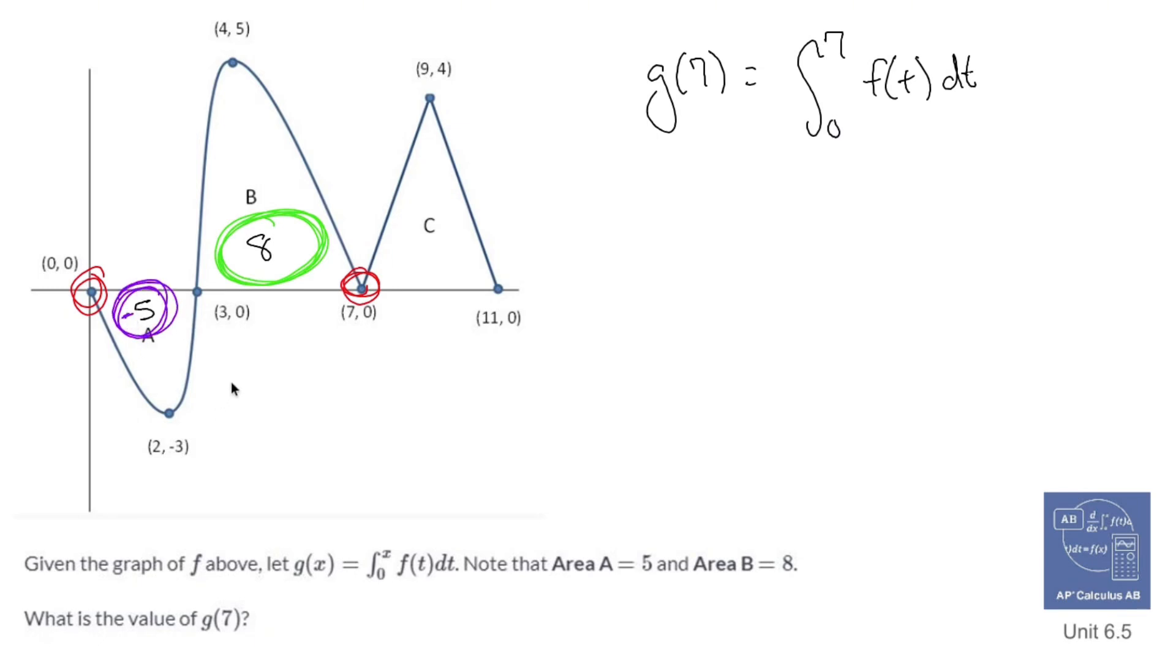So area A is actually not going to be 5, it's negative 5. So the area under the curve isn't 5 plus 8, it's actually negative 5 plus 8. Because whatever area is down here is going to cancel out the same amount of area up here. And so at the end of the day, my answer is going to be 3. Kind of tricky.